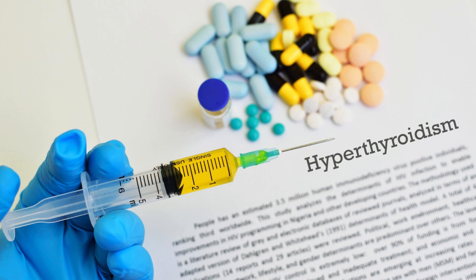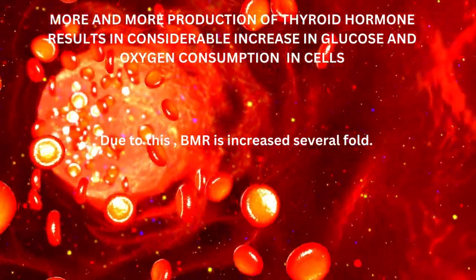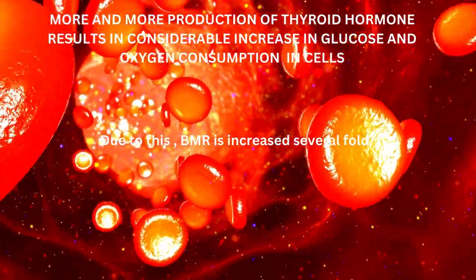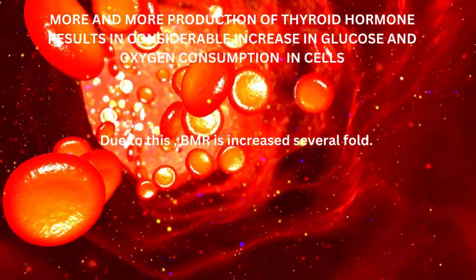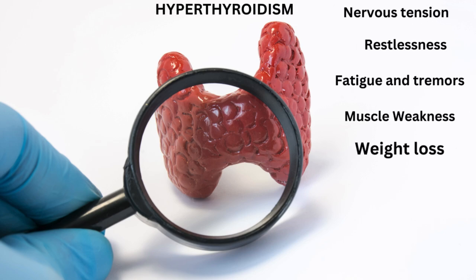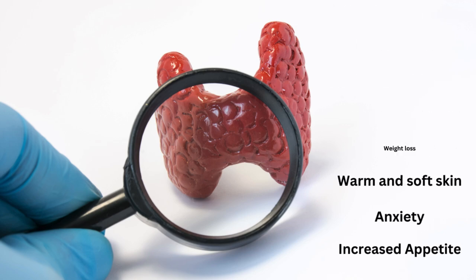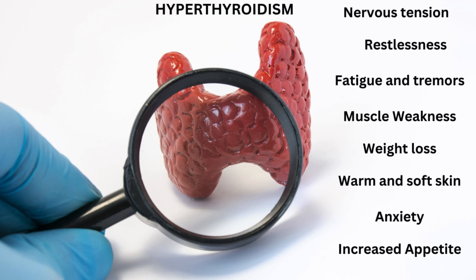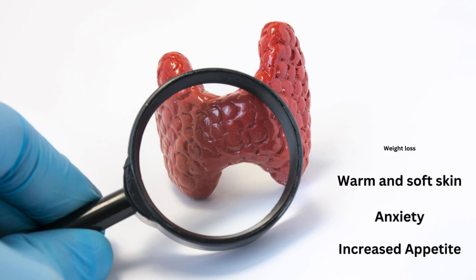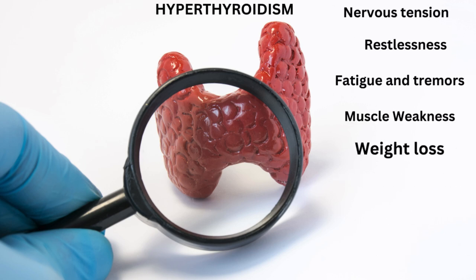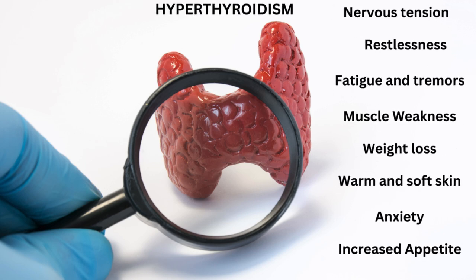Now let's enter into hyperthyroidism, which is the overproduction of thyroxine in the blood. More and more production of thyroid hormone results in an increase in glucose and oxygen consumption, which increases the BMR — basal metabolic rate. Due to the increase in BMR you can see changes like nervous tension, restlessness, fatigue, tremors, muscle weakness, weight loss, warm and soft skin, and anxiety — these are all hyperthyroidism symptoms.